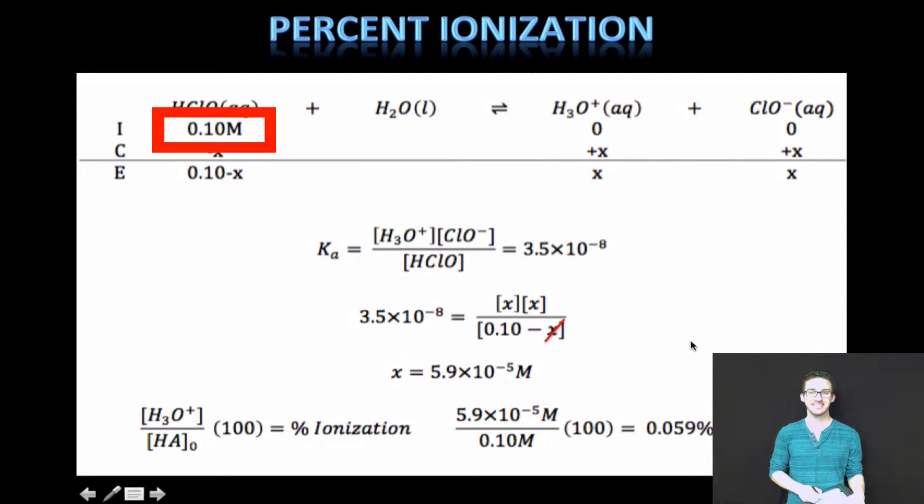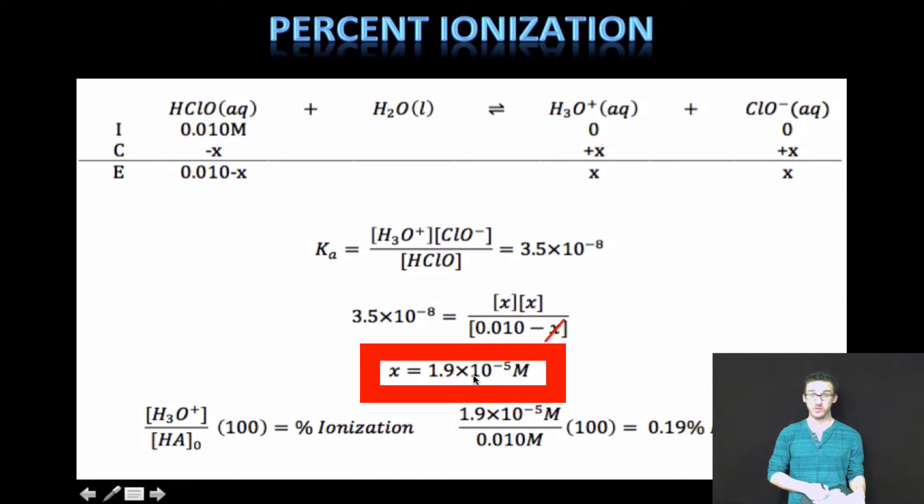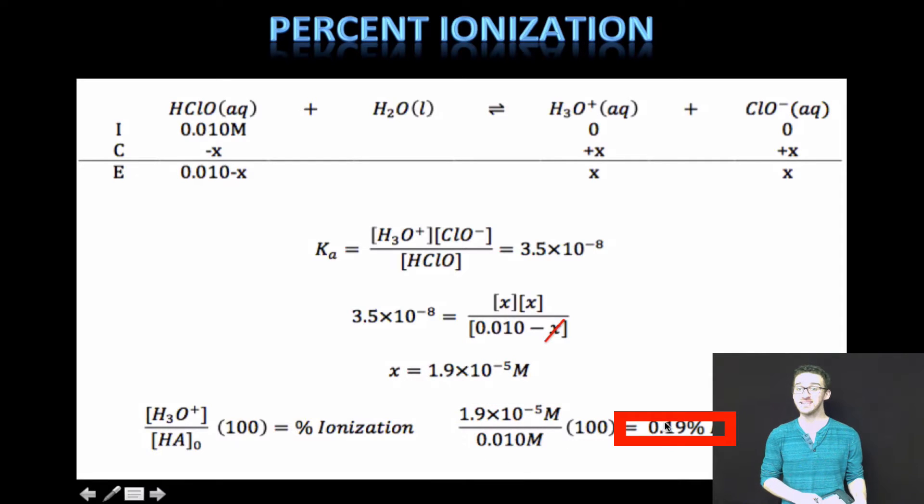Notice that if we dilute our weak acid solution, we go from 0.1 to 0.01 molar, we solve for hydronium ion concentration the same way. However, diluting the concentration of our weak acid has increased the percent ionization almost threefold.